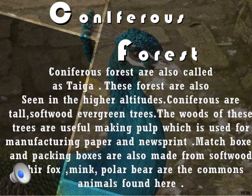Coniferous forests, popularly known as taiga, grow between 55 degrees and 70 degrees latitude in both hemispheres. The temperature is low here all year round. The trees are tall and straight with small needle-like leaves. They provide softwood useful for making furniture, matchsticks, paper, newsprint, and sports accessories. These trees include pine, fir, spruce, and cedar. Animals found here include fox, mink, and black and brown bears.